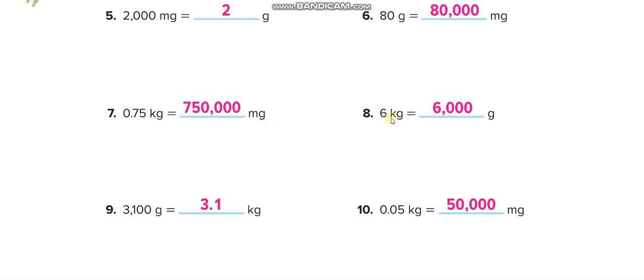Next: 6 kilograms equals 6000 grams. 3100 grams divided by 1000 equals 3.1 kilograms. Now convert 0.05 kilograms to milligrams: first multiply by 1000 to get grams — move the decimal three places right to get 50 grams — then multiply by 1000 to get 50,000 milligrams.